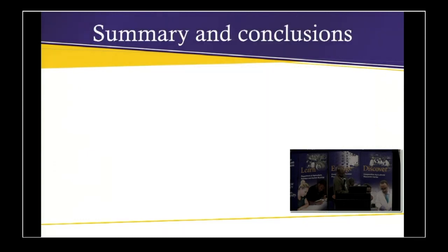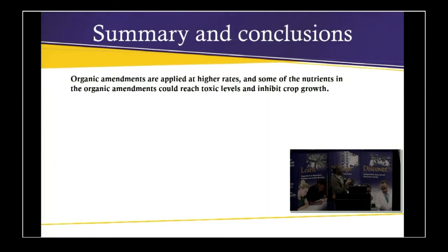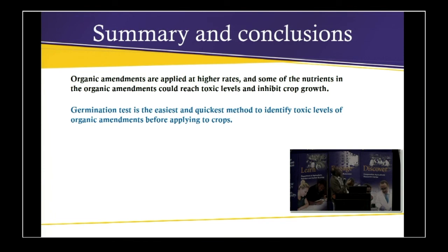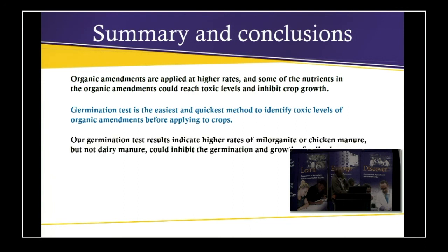In summary, organic amendments are applied at higher rates than conventional fertilizers, and some nutrients could reach toxic levels and inhibit crop growth. The germination test is the easiest and quickest method to identify toxic levels before applying amendments to crops or in the field. Our germination test results indicate that higher rates of Milorganite or chicken manure — but not dairy manure — can inhibit germination and growth of collard greens.